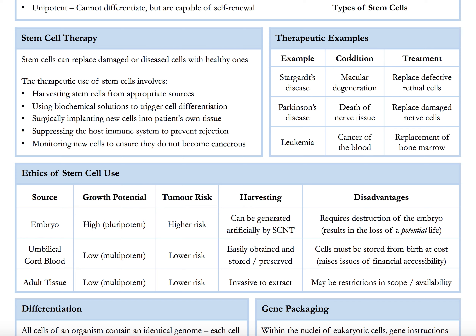Let's look at some examples we have to know for the IB. First, Stargardt disease — basically the cells in your retina, inside your eye, start to degenerate, so we need to replace retinal cells. Parkinson's disease involves the death of nerve tissue. It's actually quite complex because it's happening in your brain — different protein compounds form which cause uncontrollable shaking of the hands and muscle contractions.